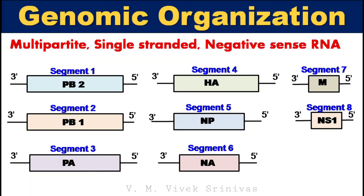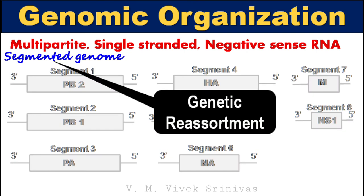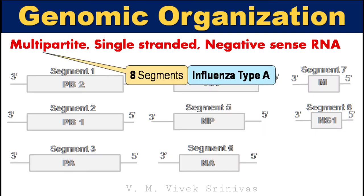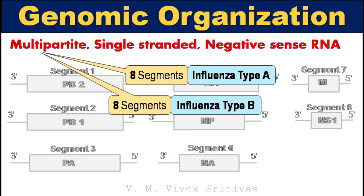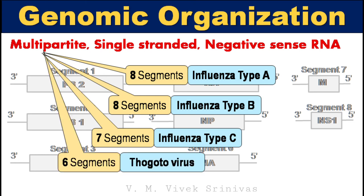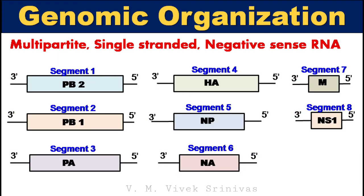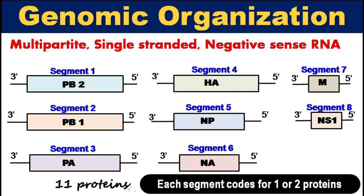Genomic organization. The genome is multipartite — that is, segmented, single-stranded, and negative-sense RNA. This segmented genome may result in genetic reassortment. Influenza type A virus possesses 8 segments, type B possesses 8 segments, type C has 7 segments, and thogatavirus has 6 segments. Our interest is influenza type A virus, which possesses 8 segments. These 8 segments code for 11 proteins — that is, each segment codes for 1 or 2 proteins.